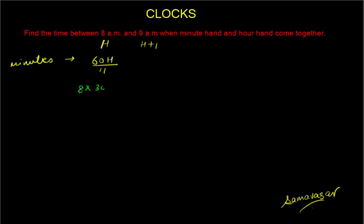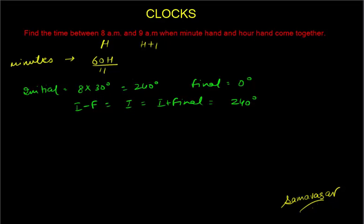Now after this if they are coming together, what is the initial angle? Again I'm going to use the relative velocity concept. The initial angle in this case is 8 into 30 degrees which is equal to 240 degrees. What is the final angle? If they are coming together then my final angle is 0 degrees right, there is no difference.